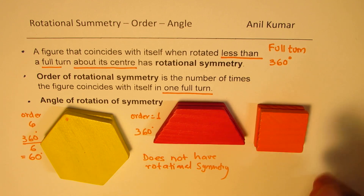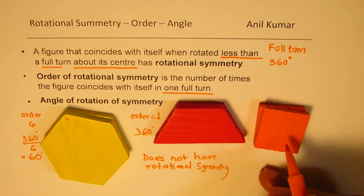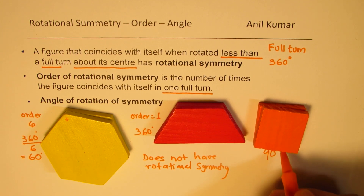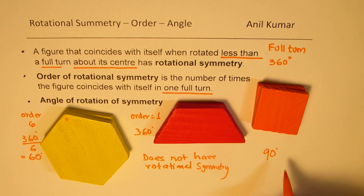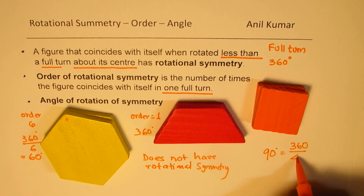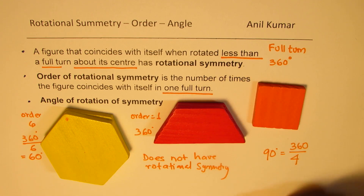In the case of a square, it matches after a 90-degree turn when rotated about its center. Therefore, the angle of rotation is 90 degrees. You get it by dividing 360 by 4, since the square has an order of rotational symmetry of 4. I think the concept of rotational symmetry, its order, and angle is now absolutely clear.